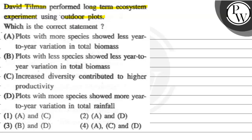The first statement: plots with more species showed less year-to-year variation in total biomass. The second option: plots with less species showed less year-to-year variation in total biomass. The third statement: increased diversity contributed to higher productivity. The fourth statement: plots with more species showed more year-to-year variation in total rainfall.